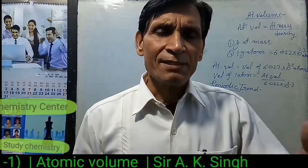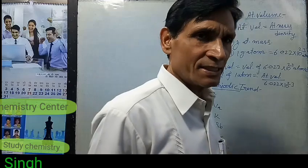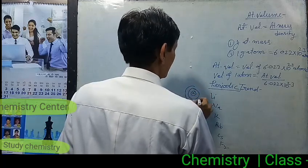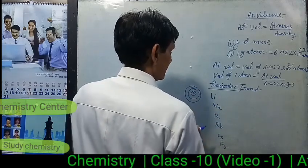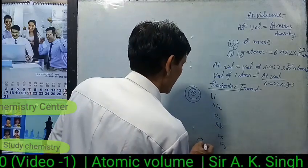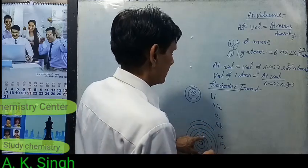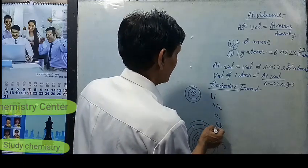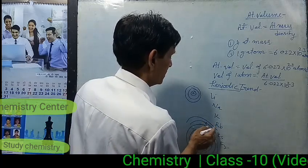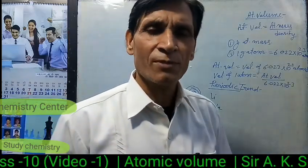The reason is the successive increase in the number of shells. Lithium has 2 shells, sodium has 3 shells, potassium has 4, rubidium has 5, cesium has 6, and francium has 7 shells. Due to this successive increase in the number of shells, the atomic volume of the element increases.